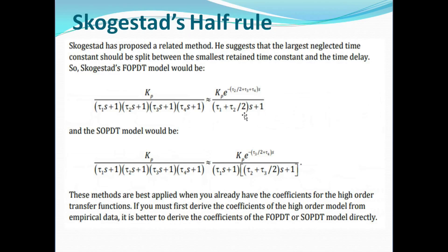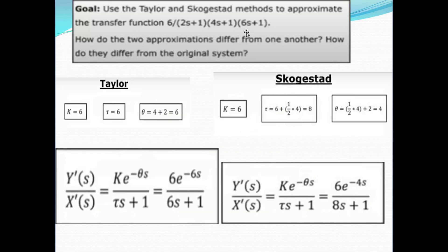In the numerator for Skogestad's half rule, theta = τ₂/2 + τ₃ = 4/2 + 2 = 2 + 2 = 4. So the dead time value theta is 4, and tau in the denominator is 8. These are the two first order approximations for the third order system: using Taylor's method we get tau=6, theta=6; and using Skogestad's half rule we get tau=8, theta=4.